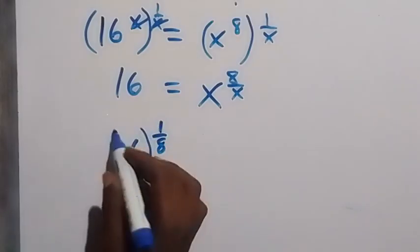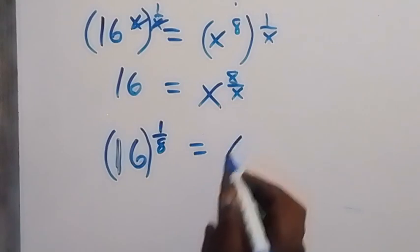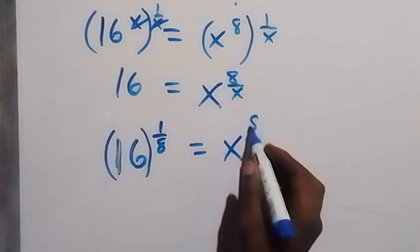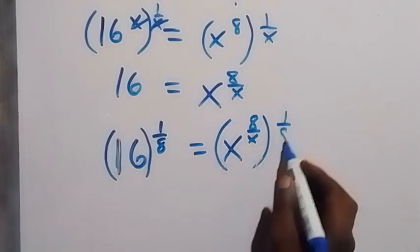Then also, on this side, we multiply this power by 1 over 8. So we have x raised to the power of 8 over x times raised to the power of 1 over 8.